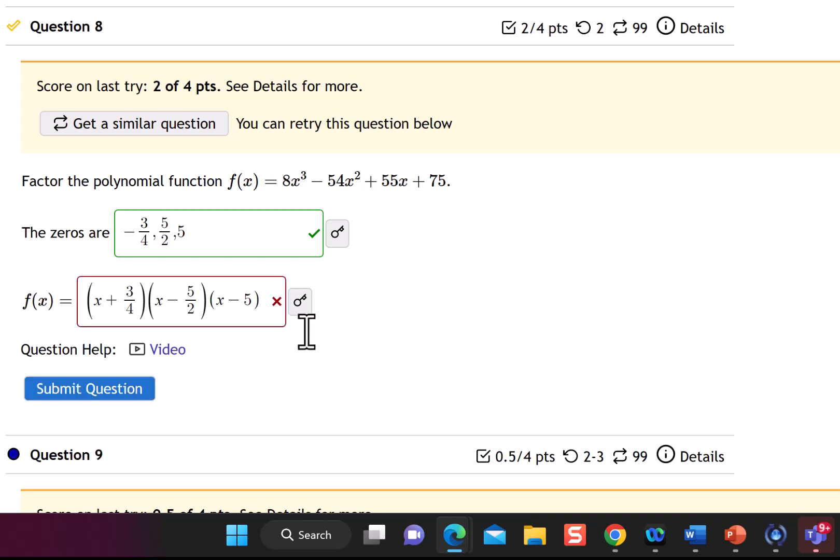Why is it wrong? Well, it's wrong because we don't have the correct leading coefficient. If we were to multiply out this polynomial, we would have a leading term of x³. And our original polynomial was 8x³. So I need to make sure my leading coefficient is also an 8.